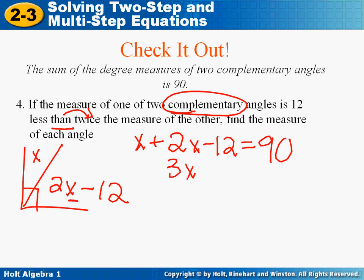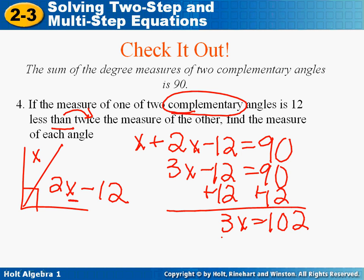Combining like terms and solving your very simple two-step equations. Now again, be careful what they're asking you for. 3x goes into 102, 34 times. So x is 34. Back into your problem right here, the first angle is 34.